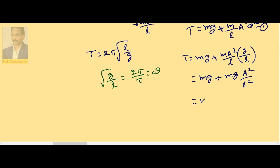If I take mg common, it becomes 1 plus A by L whole square. So the maximum tension possible at the mean position in terms of amplitude, length, and mass is mg into 1 plus A by L whole square.